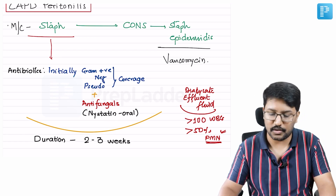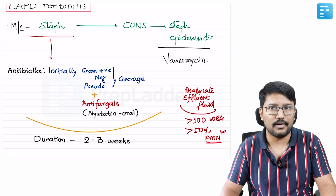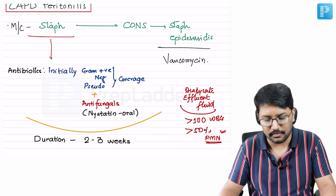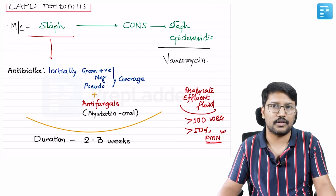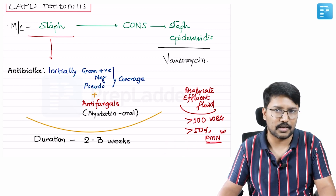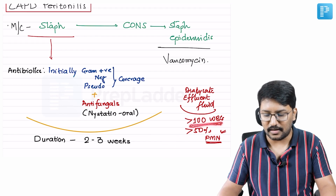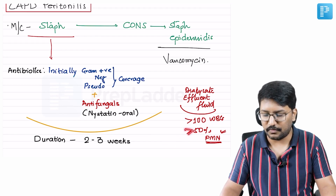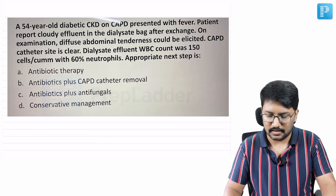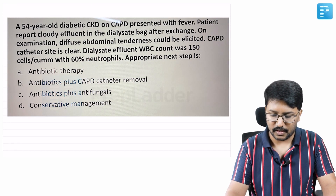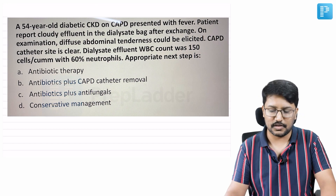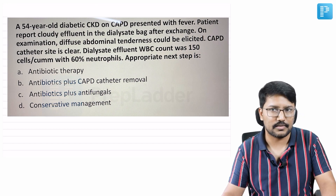For comparison, in spontaneous bacterial peritonitis the threshold is 500 WBCs with 50% PMNs, meaning 250 polymorphonuclear cells. For CAPD peritonitis it is 100 WBCs with more than 50% PMNs. This patient has 150 WBCs with 60% neutrophils — that satisfies the criteria. This patient has CAPD peritonitis.